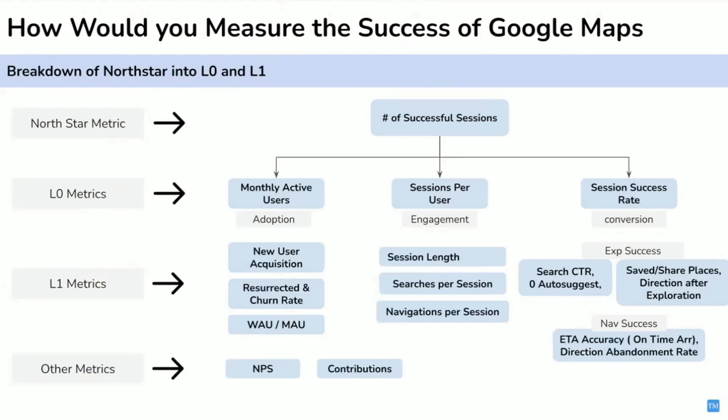Some other metrics to consider are user NPS and user contributions per day, because these contributions are the backbone of Google Maps — enabling real-time updates and accuracy.